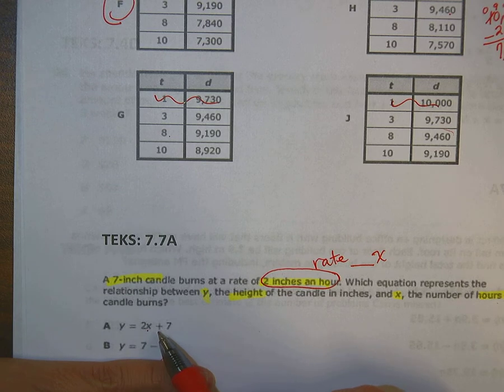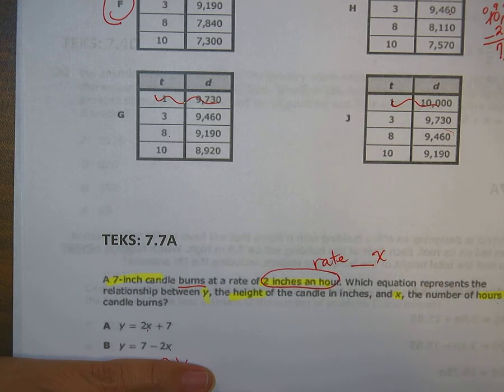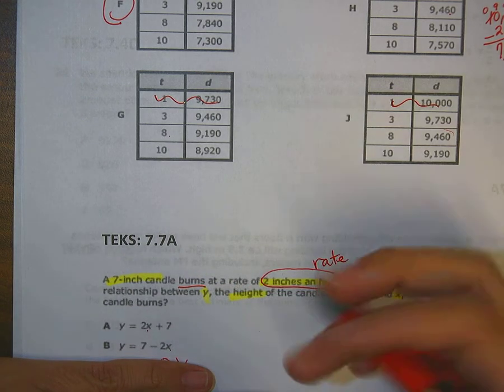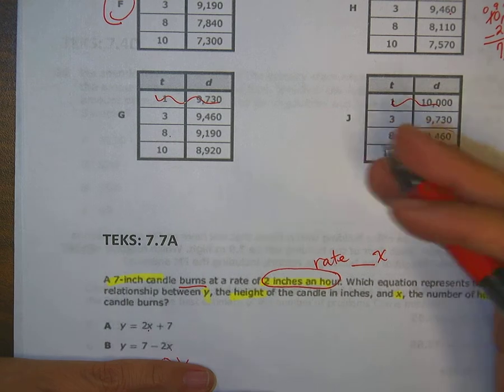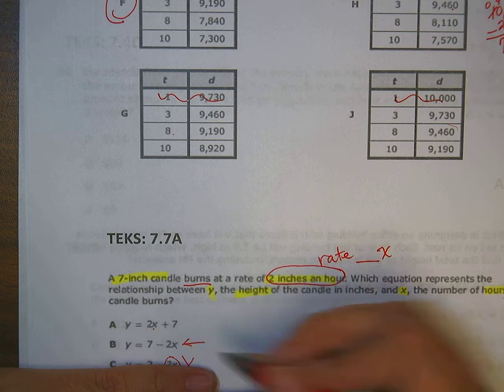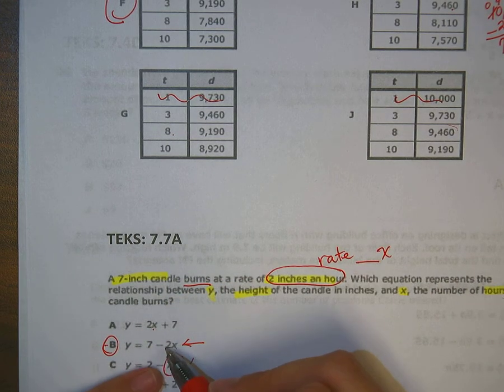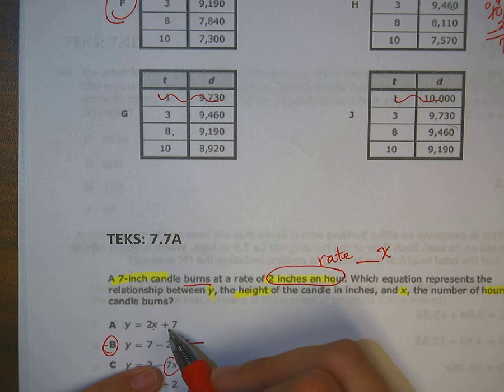2x plus seven. Okay, why would we be adding? It's burning, right? So when a candle burns, is that going to mean it's growing or it's making it shorter? Well, if it's making it shorter, this one has to be it. It's got to be B, right? Shorter meaning negative. Here it's like saying it's going to burn but then we're adding on seven inches to it. No.